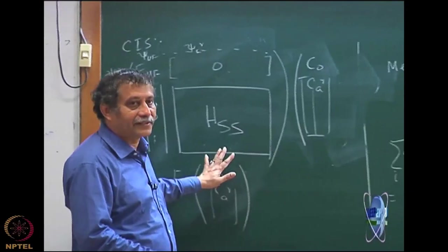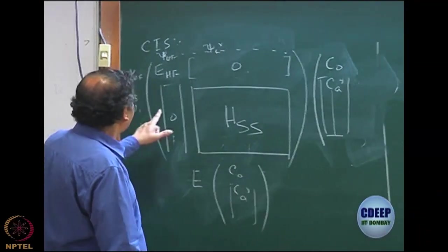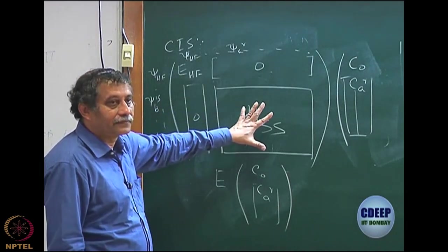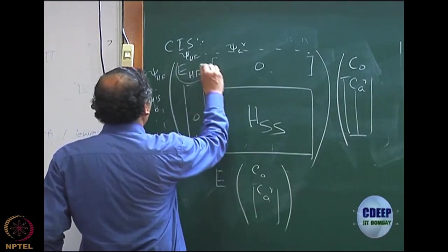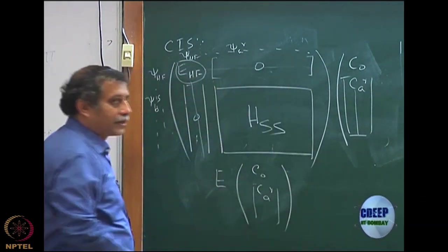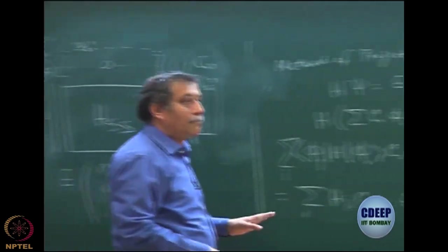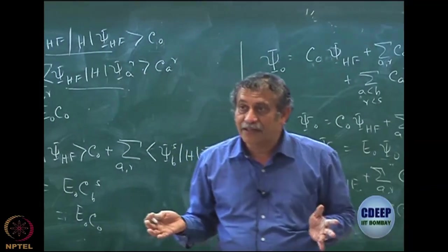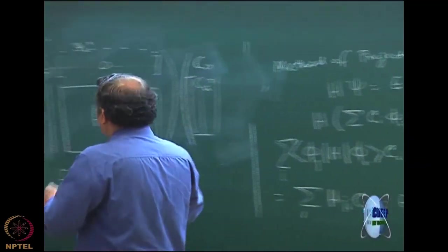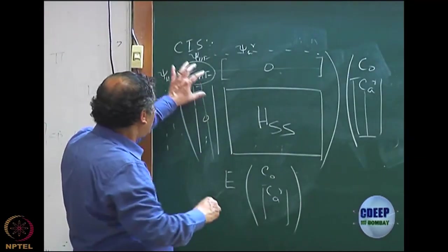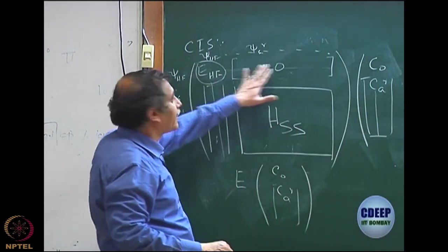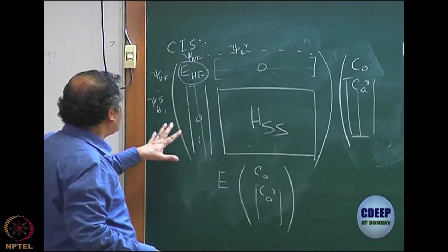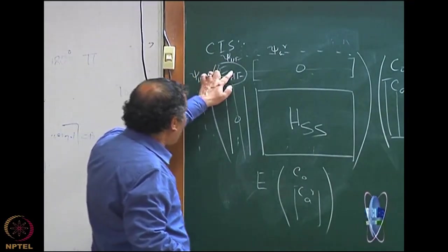Essentially I have to diagonalize this matrix. You can see it has a very nice block diagonal structure: the first row and column have E_HF but everything else is 0, so it is block diagonal. A matrix with a block diagonal structure like a 4×4 with two 2×2 blocks means instead of diagonalizing the full 4×4 matrix, you diagonalize each 2×2 block separately. This is much cheaper because diagonalization cost goes as N-cubed. Diagonalizing two 2×2 matrices costs 2×8=16 operations versus 4-cubed=64 for the full matrix.